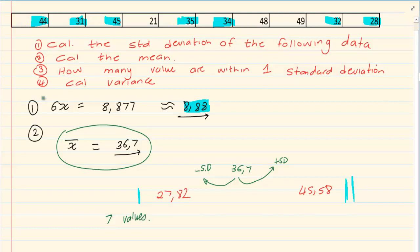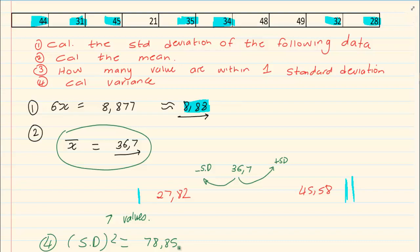The next question is calculate the variance. Variance is simply standard deviation squared. So we say 8.88 squared, and we get 78.85. If you square the standard deviation you get the variance, so the variance is 78.85.